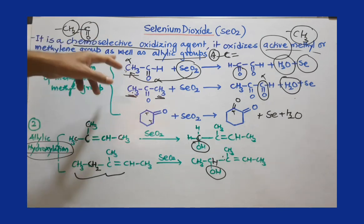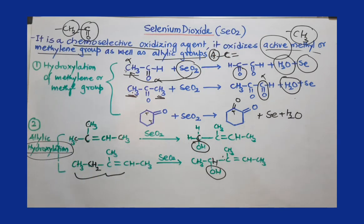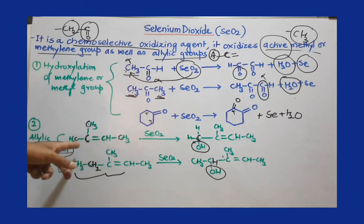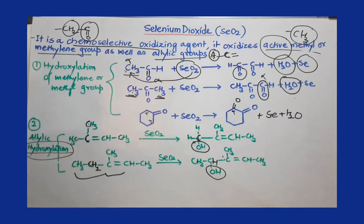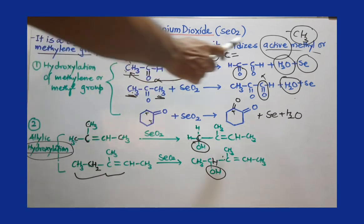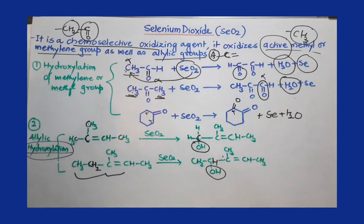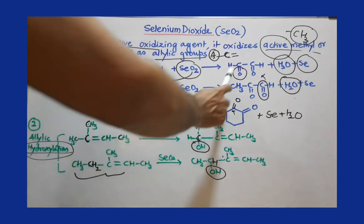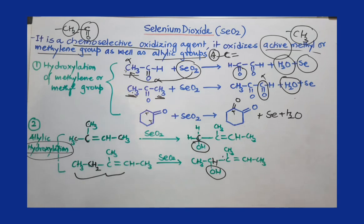Selenium dioxide is used either for the oxidation of active methyl or methylene groups, where a carbonyl group is introduced, or for the oxidation of allylic carbon, where a hydroxyl group is introduced. This is all about selenium dioxide. Thank you.